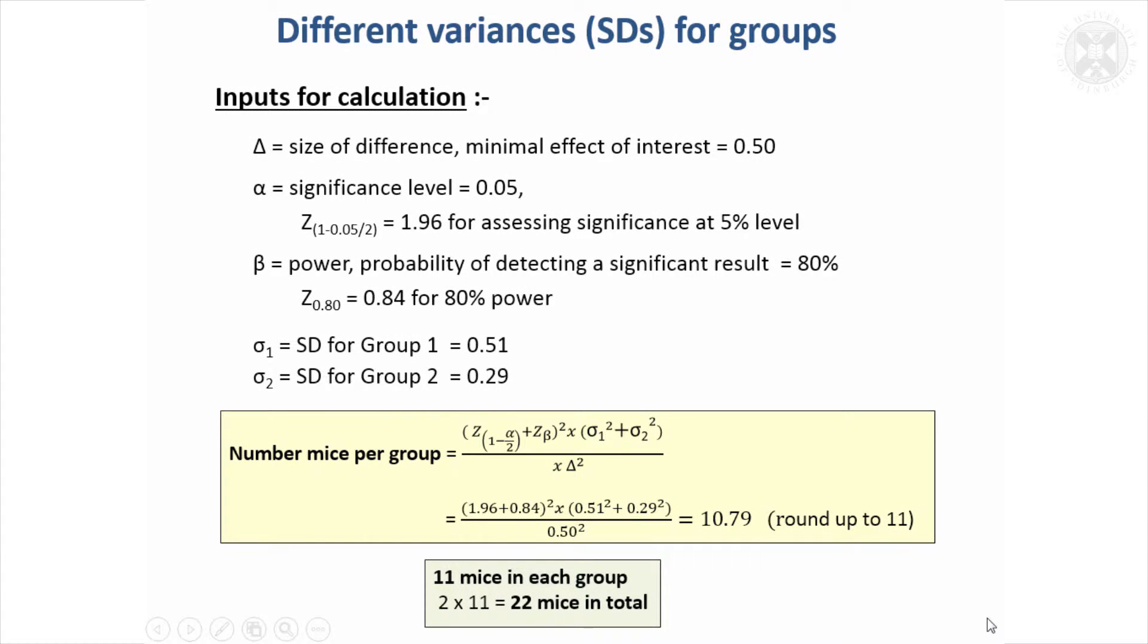Another situation that might crop up is that there's clearly a different amount of variability in the groups and you know about this in advance.